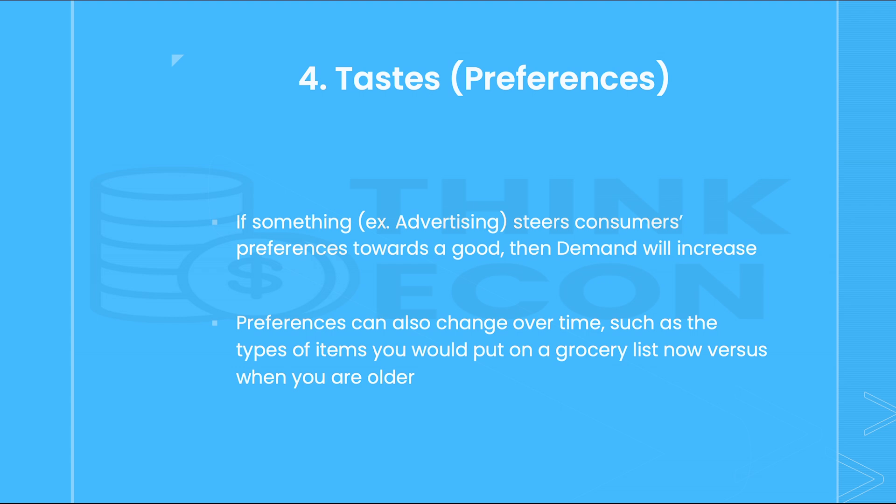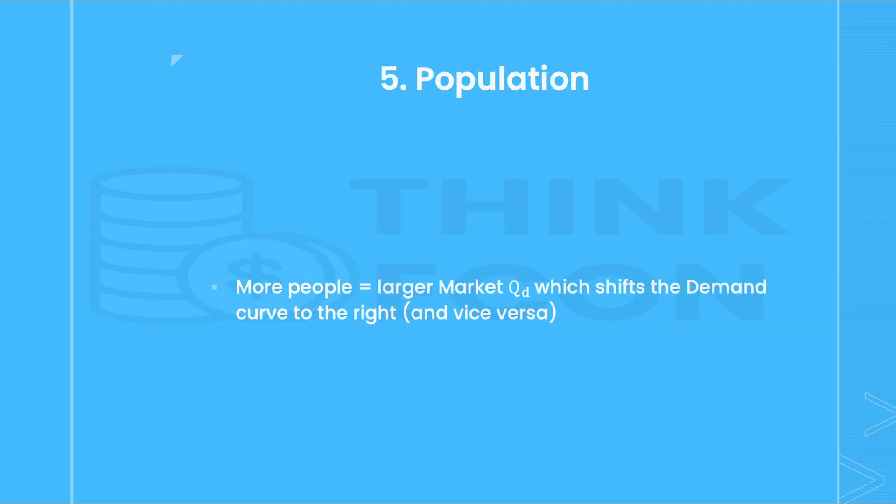The fourth shift factor is a change in consumer preferences. For example, if something like advertising steers consumers' preferences towards a good, then demand for that good will generally increase. Preferences can also change over time, such as the types of items you would put on a grocery list now versus when you're older. Finally, the fifth shift factor is population — pretty simple to remember. The more people, the larger the market, which shifts the demand curve to the right.